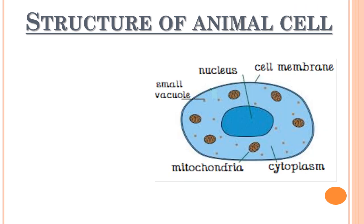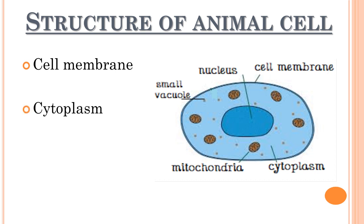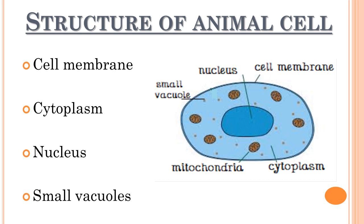Let's move on to the structure of the animal cell. The animal cell has a cell membrane which acts as a boundary wall to protect the cell's internal environment from the outer environment. This membrane holds the internal structures of the cell in a specified area, just like a jelly in a bowl. There is cytoplasm inside the animal cell, which is a jelly-like colorless substance holding organelles. Animal cells have a nucleus which is the control center of the cell. Animal cells also have vacuoles, but these are small and short-lived, collecting waste material from the cell and expelling it through the cell membrane.